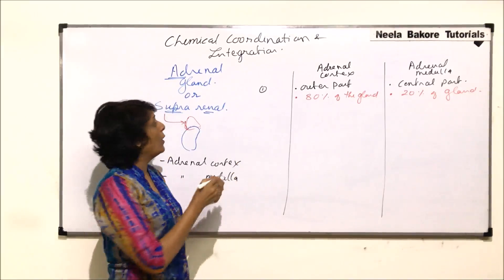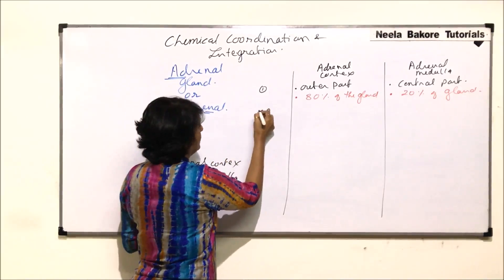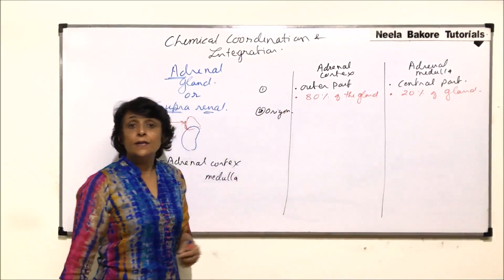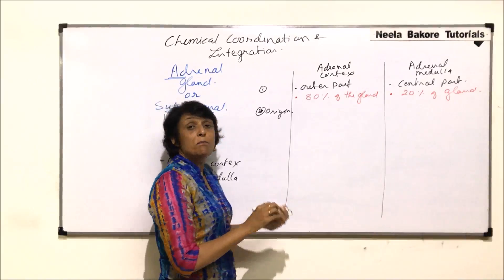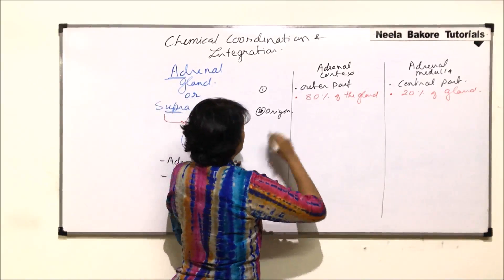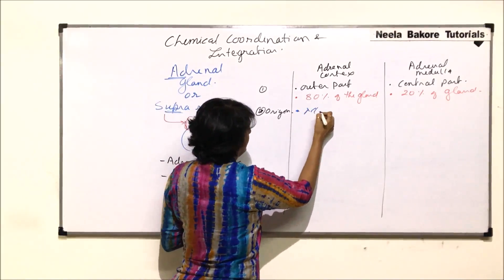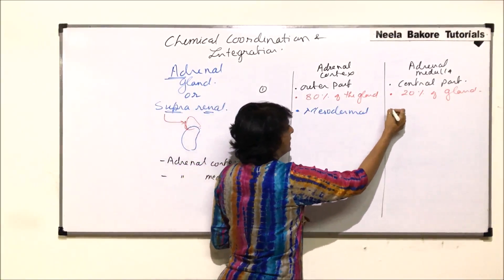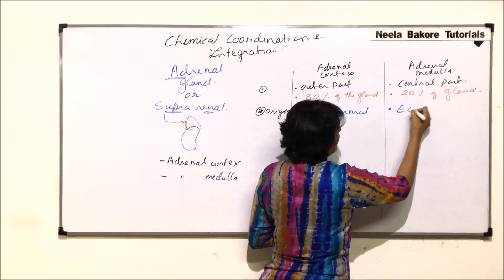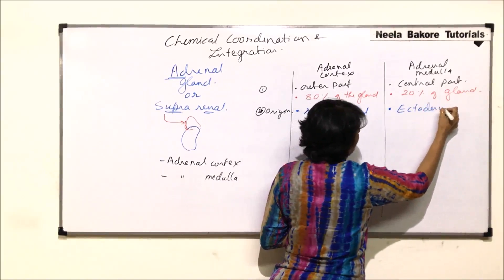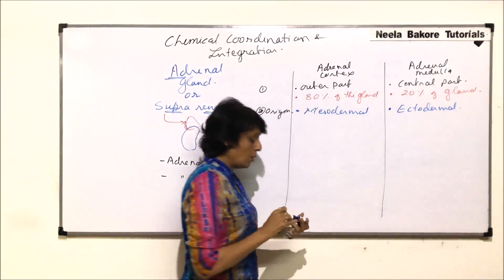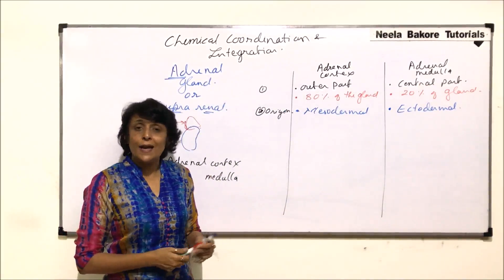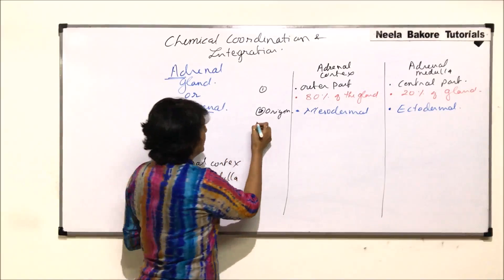The second point of comparison is origin. The adrenal cortex is mesodermal in origin, whereas the adrenal medulla is ectodermal in origin. So the germ layers from which they develop are also different.